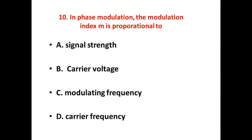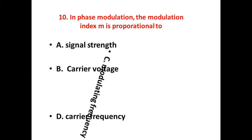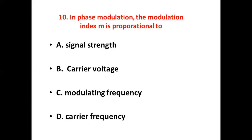Tenth bit. In phase modulation, the modulation index M is proportional to. Option A: Signal strength. Option B: Carrier voltage. Option C: Modulating frequency. Option D: Carrier frequency. Answer: Option C, Modulating frequency.